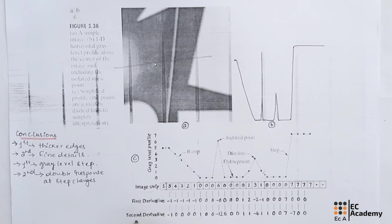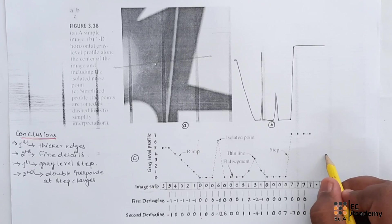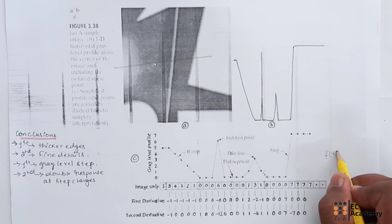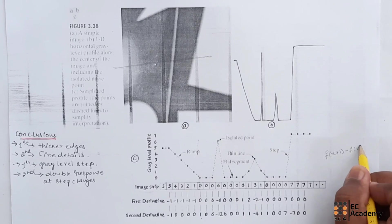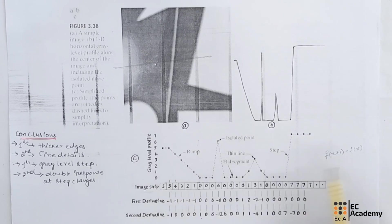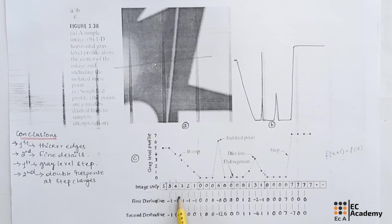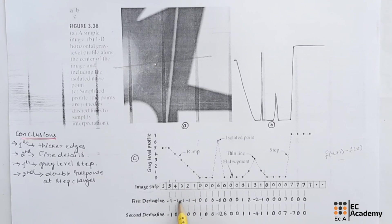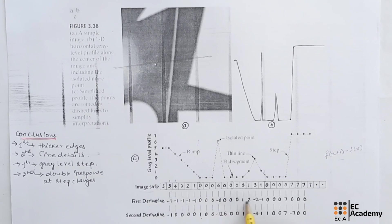Let us find the values for the first-order derivative, defined as f(x+1) minus f(x). Considering adjacent pixel pairs: 4 minus 5 is −1; 3 minus 4 is −1; 2 minus 3 is −1; 1 minus 2 is −1; 0 minus 6 is −6; 1 minus 3 is −2. Likewise, we can find all values for the first-order derivative.